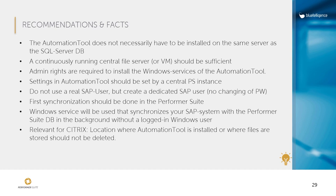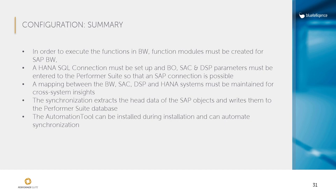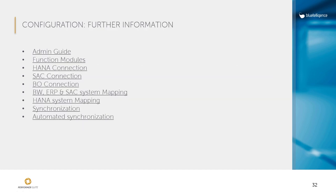Let's summarize this lesson. Function modules must be created for SAP BW to execute functions, and a HANA SQL connection must be set up. For BO, SAC, and Datasphere, parameters must be entered into the Performersuite so it can connect to the SAP systems. Mapping between BW, SAC, Datasphere, and HANA systems must be maintained for cross-system insights. The synchronization extracts metadata of the SAP objects and writes them to the Performersuite database. The automation tool can be installed during installation and can automate this synchronization procedure. The referenced user manual articles and other interesting configuration articles can be found on the linked slide.